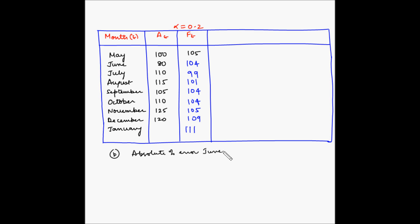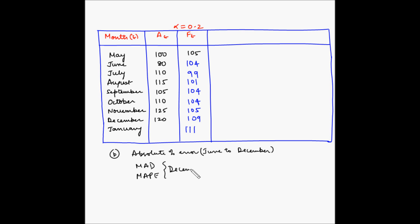Now for part B, we need to calculate the absolute percentage error for each month from June through December, and then calculate the mean absolute deviation and mean absolute percentage error as of the end of December. Note that this is the absolute percentage error, not the mean absolute percentage error.